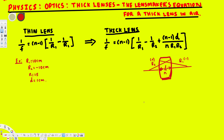In this video we are going to look at the lens maker's equation for a thick lens, and also compare it with the thin lens to see whether we get the same answer. For a thin lens, the lens maker's formula is: 1 over focal length equals n minus 1, where n is the index of refraction of the lens material. We consider the outside medium as air, so we use 1, and the lens material is typically glass, giving n = 1.5.